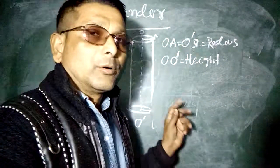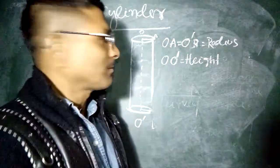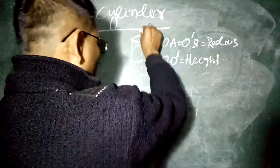Both are equal, which are called the radius of the cylinder, and from O to O dash, this is called height of the cylinder.